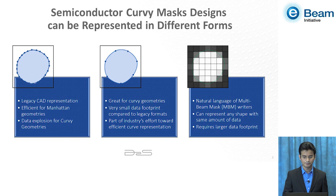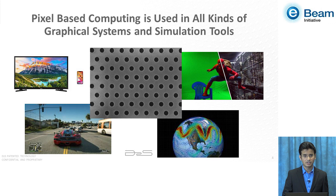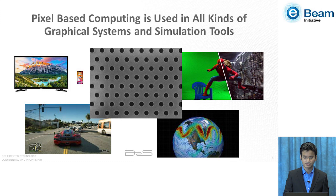Pixel-based computing is used in all kinds of graphical tools and simulation tools — it's in your movies, in general CAD tools for weather simulation, in games, in CGI. And it's also part of the semiconductor industry. It's used in ILT simulations, e-beam simulations, mask inspections, and many other things.